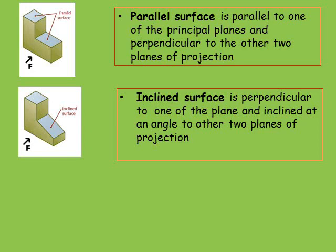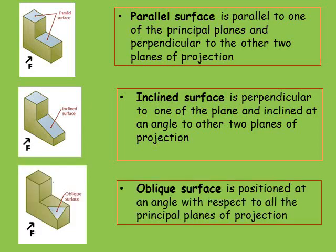The next is inclined surface. An inclined surface is perpendicular to one of the principal planes and inclined at an angle other than 90 degrees to the other two planes. The projection of the surface will be aligned in the plane to which it is perpendicular, but will appear foreshortened in the other two planes — that is, the true shape is not visible in any of the three views. The final one is oblique surface, which is positioned at an angle with respect to all the principal planes of projection, so the true shape and size will not be visible in any of the three views.